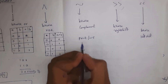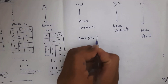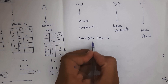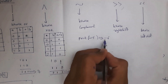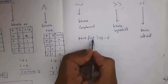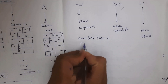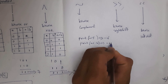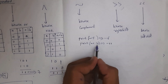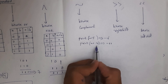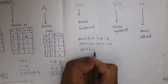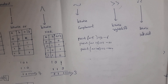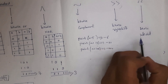Bitwise complement (~) increments the value by 1 and adds a negative sign. For example, ~5 = -6, ~10 = -11, and ~100 = -101. This is the use of bitwise complement.